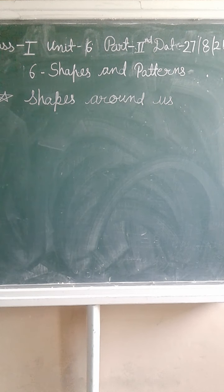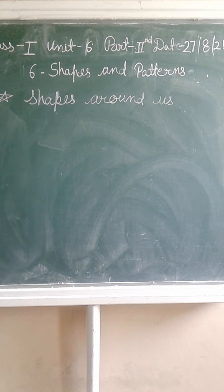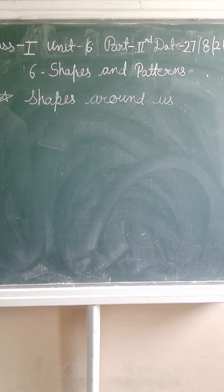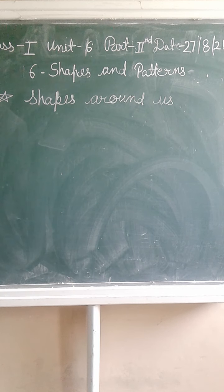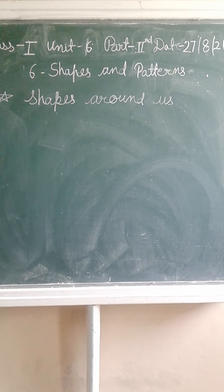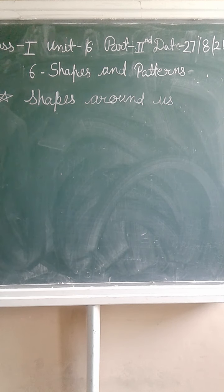Shapes are all around us. How many shapes are all around us? See, at the home — Almira. Almira's shape is Rectangle. Carom. Carom's shape is Square.